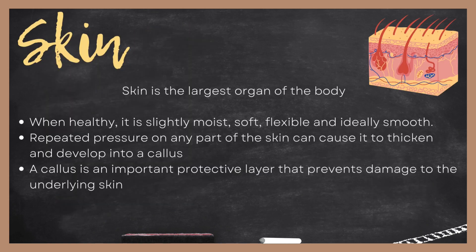The skin is the largest organ in the body. When it's healthy, it's slightly going to be moist, soft, flexible, and ideally smooth. Repeated pressure on any part of the skin is going to cause it to thicken and develop into a callus. But we have to remember that a callus is an important protective layer that's going to help prevent damage to that underlying skin.